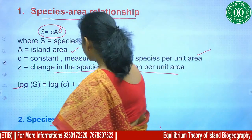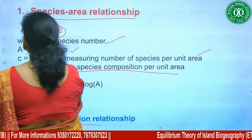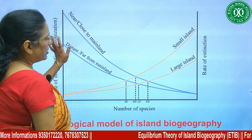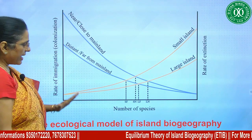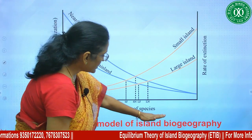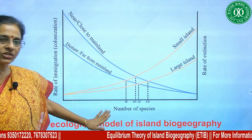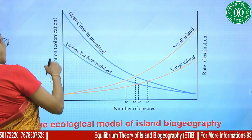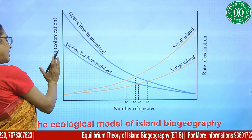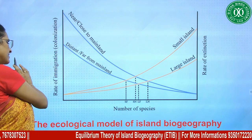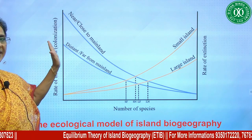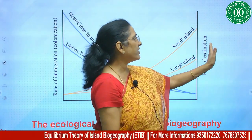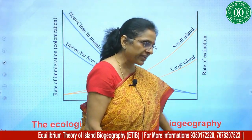Now let us study this with the help of a graph. On the X-axis, the number of species is shown. On the Y-axis, on the left side is the rate of immigration (colonization), and on the other side is the rate of extinction.